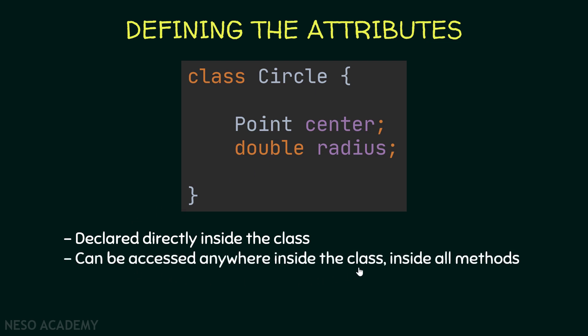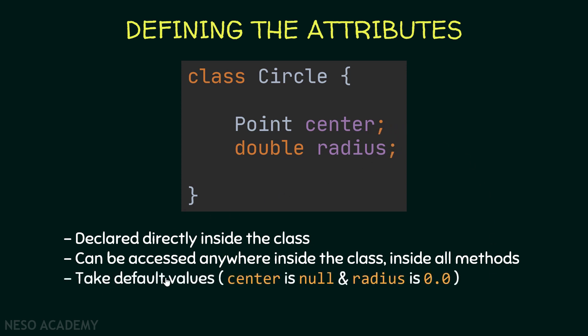Since we can access these variables inside all the methods in the class, and we are only declaring them here, they take default values. The center will be null because it is a reference type, and the radius will be 0.0 because it is a numeric type.